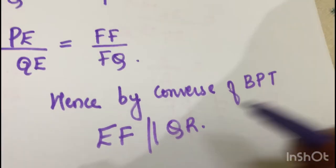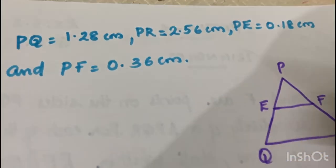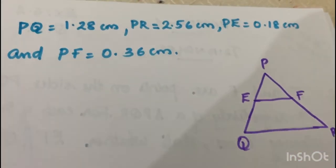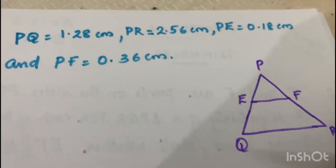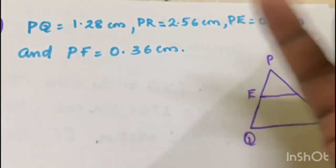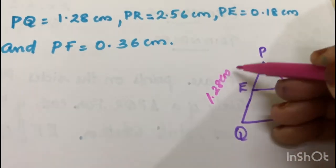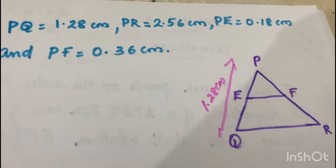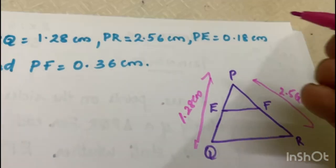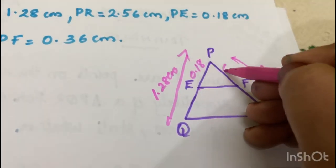Now for the third case: PQ is equal to 1.28 cm, PR is equal to 2.56 cm, PE is equal to 0.18 cm, and PF is equal to 0.36 cm. We will check if EF is parallel to QR by finding EQ and FR.